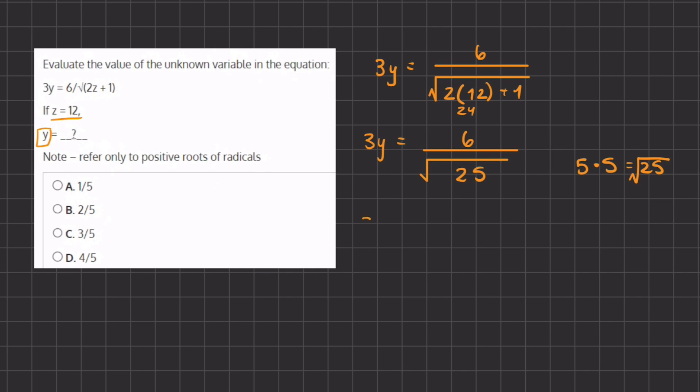All right, so we have 3y equals 6 divided by 5, which is the square root of 25. And now in order to find the value of y, we need to isolate it.